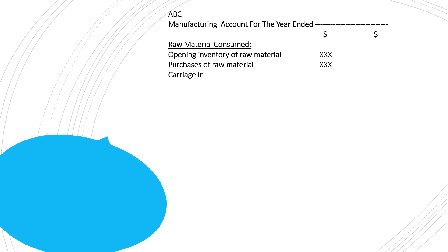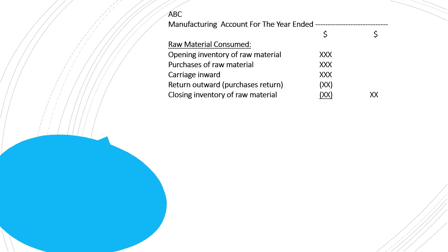Carriage inward paid to bring the raw materials to the factory will be added to the raw material purchase cost. Returns outward or purchases returns of raw materials will be subtracted, and at the end the closing inventory of raw material will also be subtracted. This gives the answer for raw material consumed — the same format as cost of goods sold in the income statement: opening inventory, plus purchases and carriage inward, minus returns outward and closing inventory.